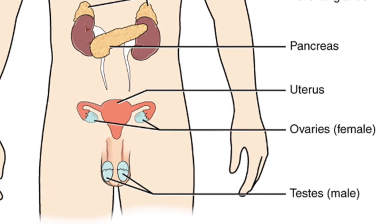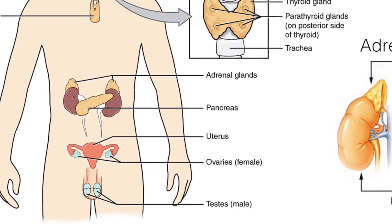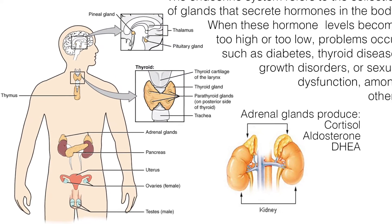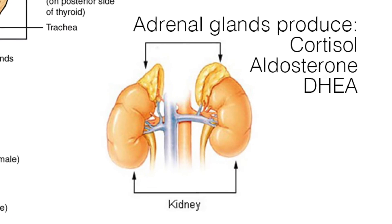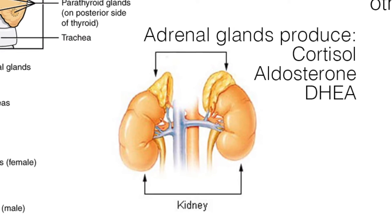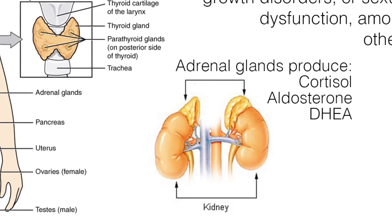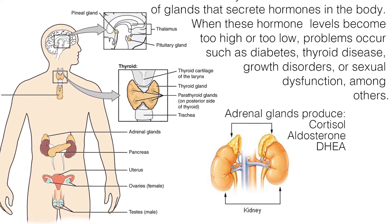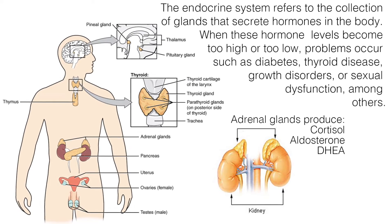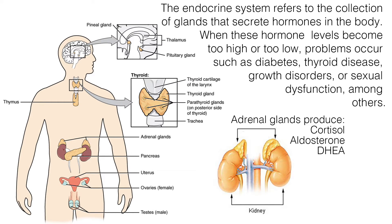When these hormone levels become too high or too low, problems occur such as diabetes, thyroid disease, growth disorders, or sexual dysfunction, among others. The adrenal glands, located above the kidneys, are part of the endocrine system that produce a variety of hormones, including cortisol, aldosterone, and DHEA. Cortisol and aldosterone play key roles in the functioning of the human body, including regulation of blood pressure, metabolism, and the body's response to stress. The body uses DHEA to make androgens and estrogens, the male and female sex hormones.